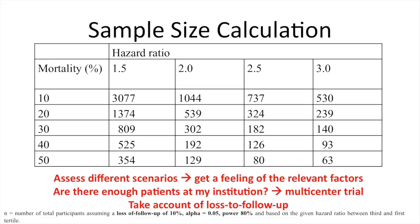Sample size calculation: there are two important variables — the event rate and the risk you want to observe. For example, a mortality rate between 10 and 50% and a hazard ratio between 1.5 and 3.0. If you only need to see a threefold increase in risk with a 50% event rate, you need just 63 people. But if you want to detect a 50% increase in risk with a 10% event rate, you need more than 3,000 people. You also need to specify alpha — similar to a p-value of 0.05 — and the power, usually between 80 and 90%, which is the likelihood you get a significant result. Assess different scenarios, get a feel for the relevant factors, and think about whether you have enough patients at your institution or need a multi-center trial.